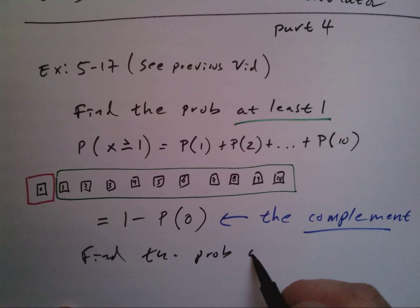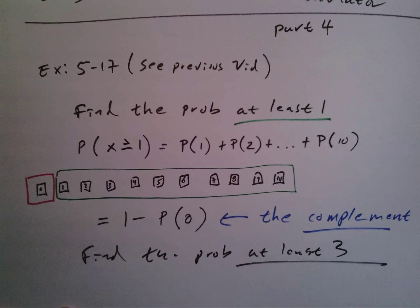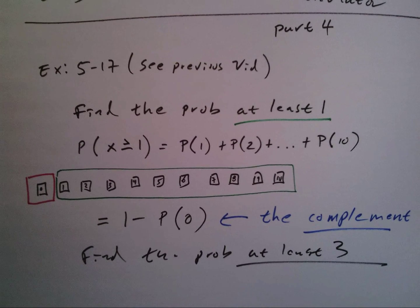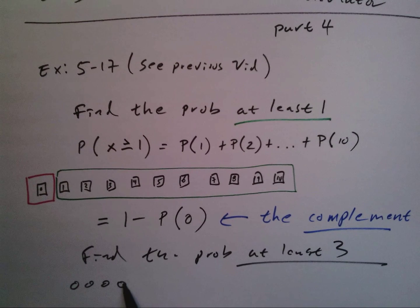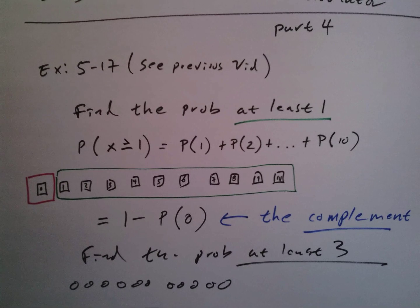Now I could have done something very similar if I had asked to find the probability at least three. If I want the probability of at least three, this time when I have my eleven boxes, I'm stopping it not at zero, not at one, not at two, but I'm stopping it at three.